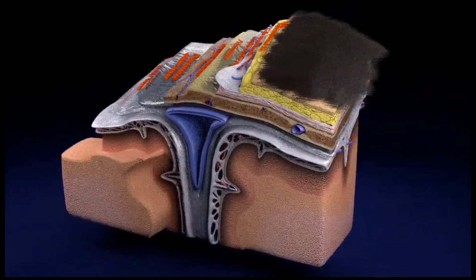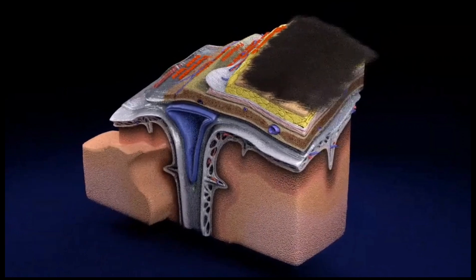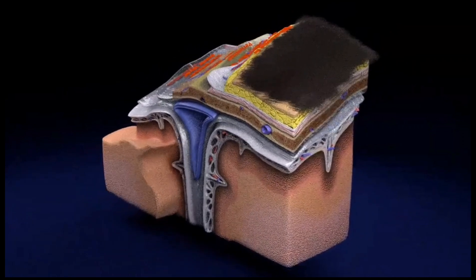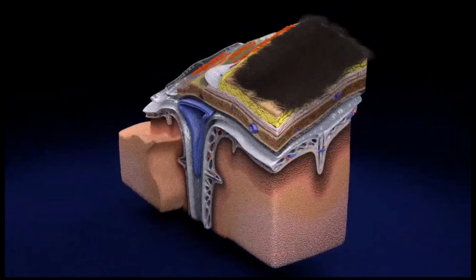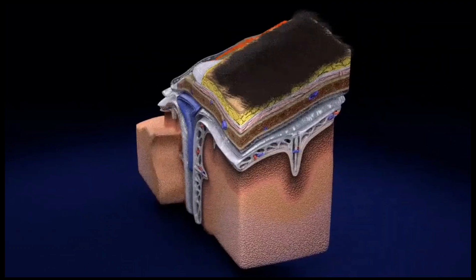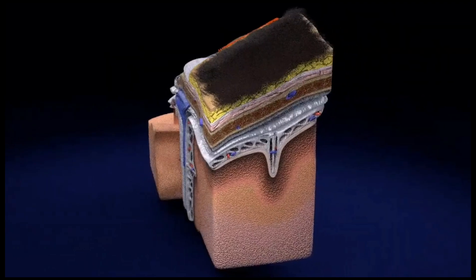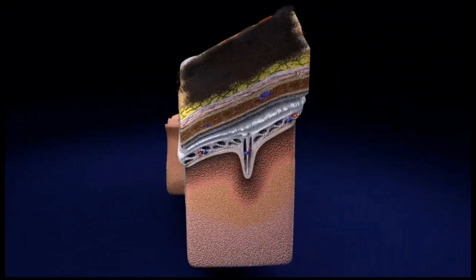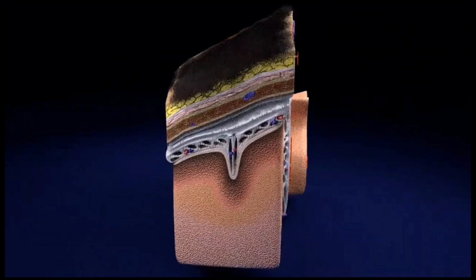The arachnoid dips into the longitudinal inter-hemispheric fissure but not into the sulci. The pia mater adheres intimately to the surface of the brain and spinal cord. It follows the brain into the gyri of the cerebral hemispheres and the folia of the cerebellum, and is the only covering to follow the contours of the brain — the gyri and the fissures.